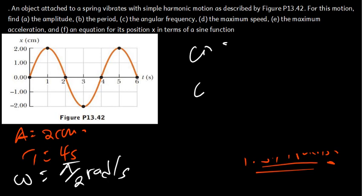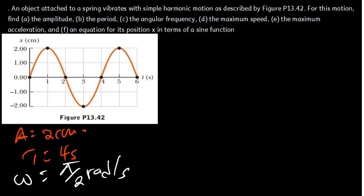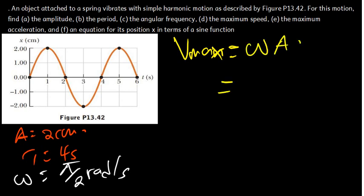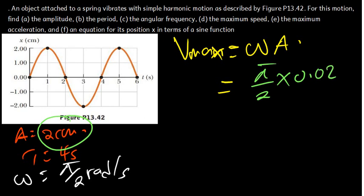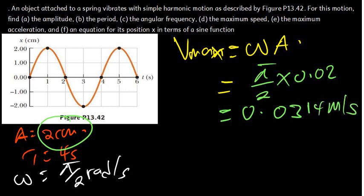The next part asks for the maximum speed. The maximum speed formula is v_max = ω × A. The angular frequency is π/2 and the amplitude is 2 centimeters, which we convert to 0.02 meters. So v_max = (π/2) × 0.02, giving us a maximum speed of 0.0314 meters per second.